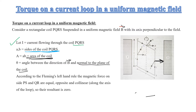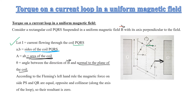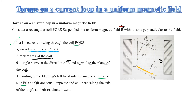Now in the diagram, magnetic field B goes from north to south pole. The normal N to the coil and the magnetic field B make the angle theta. According to Fleming's left hand rule, the magnetic forces on sides PS and QR are equal but in opposite directions — one force goes one way and the other goes the opposite way — so their resultant is zero.